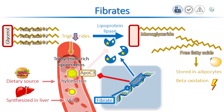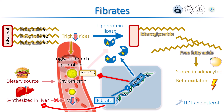In the liver, fibrates increase the breakdown of triglycerides through fatty acid beta-oxidation. This results in lower triglyceride levels, as liver cells make less VLDL. Fibrates can also increase high-density lipoproteins to some extent. PPAR-alpha increases synthesis of APO A1 and APO A2, which are major HDL apolipoproteins, contributing to increased HDL precursors.